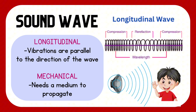When we say longitudinal, vibrations are parallel to the direction of the wave. And mechanical, it needs a medium to propagate. As you can see in the diagram, a longitudinal wave has compressions and rarefactions. Compression occurs when particles move close together, creating regions of high pressure.